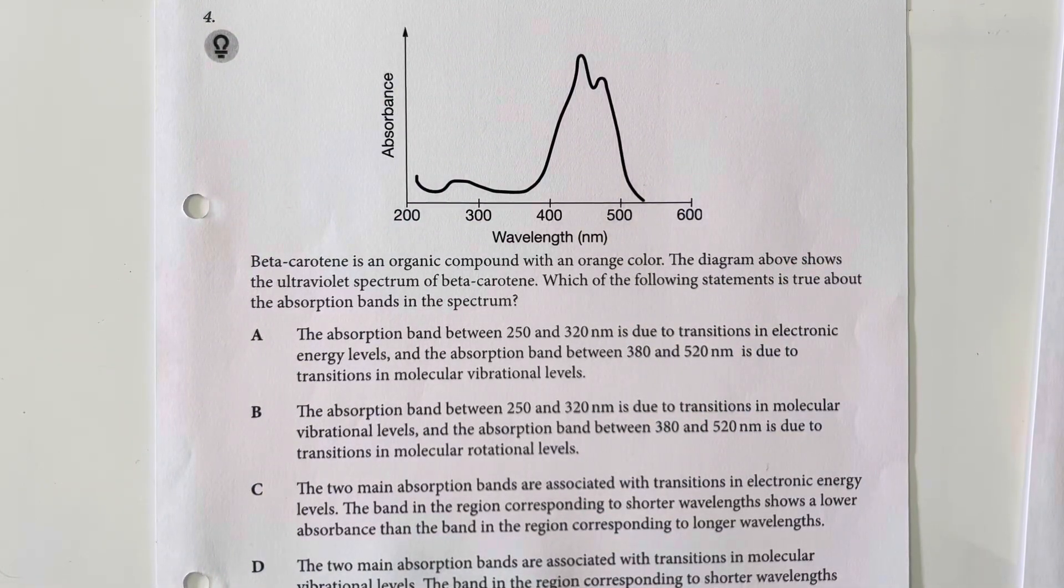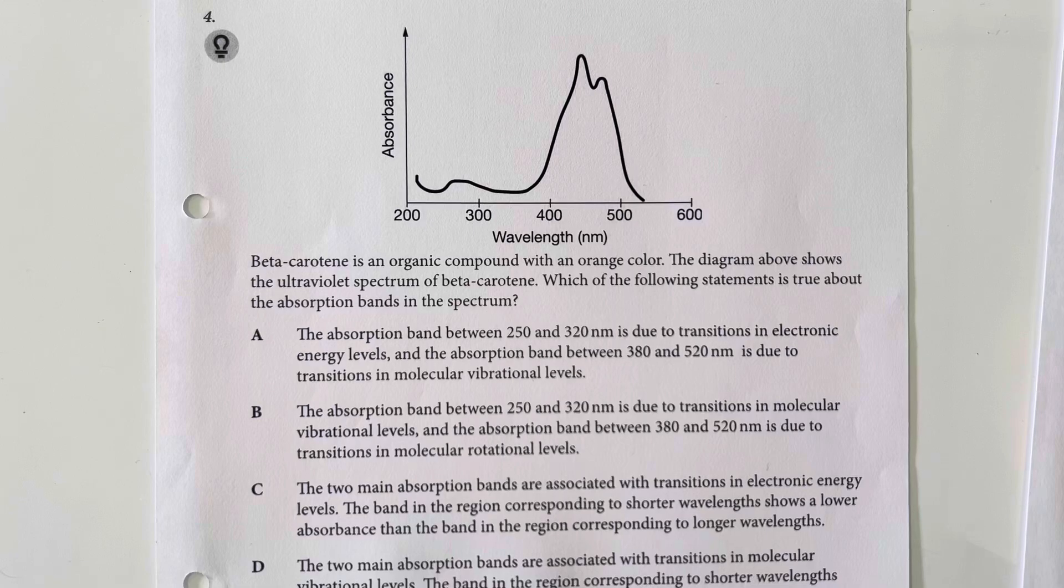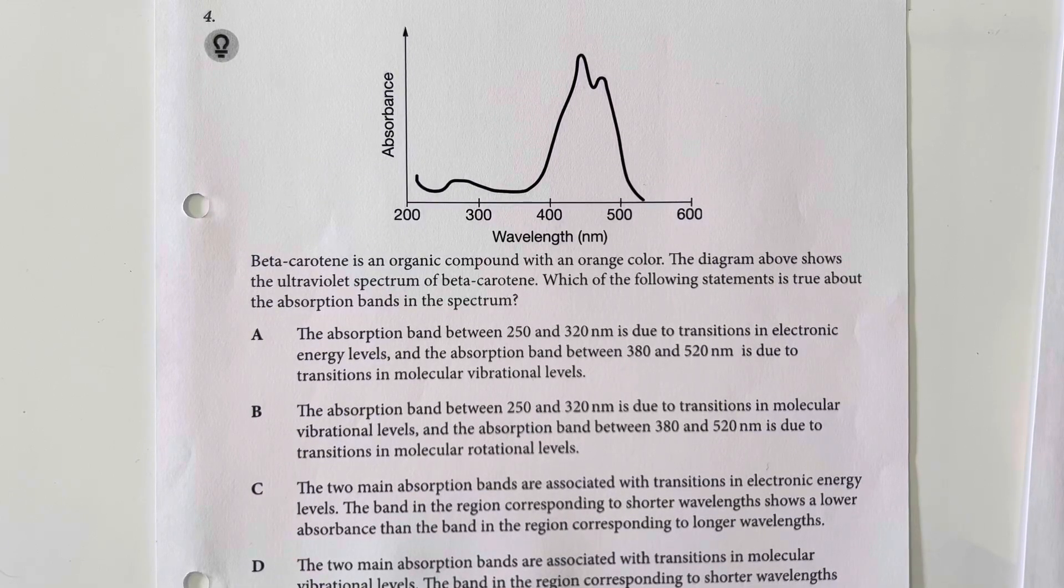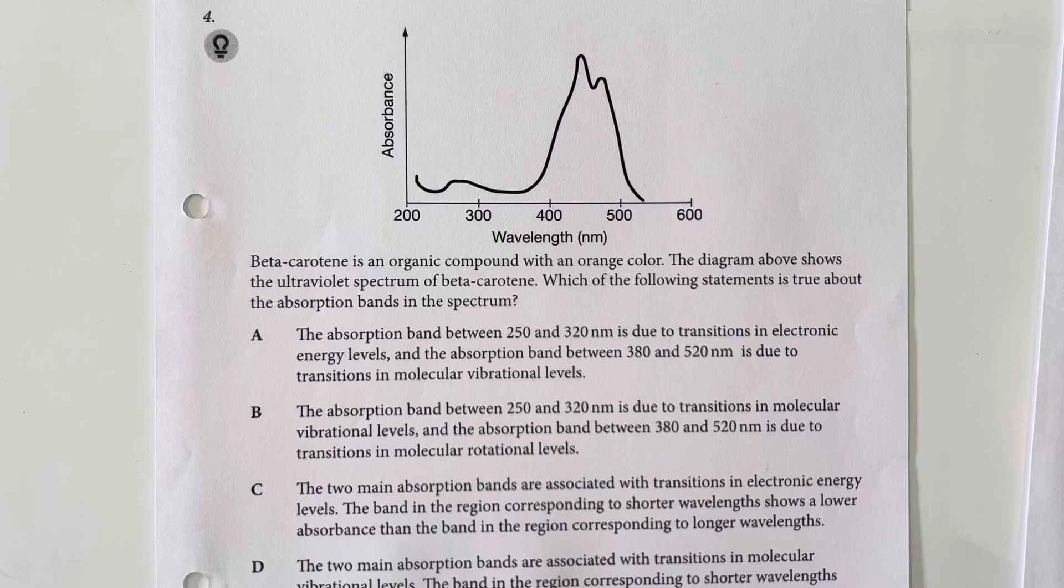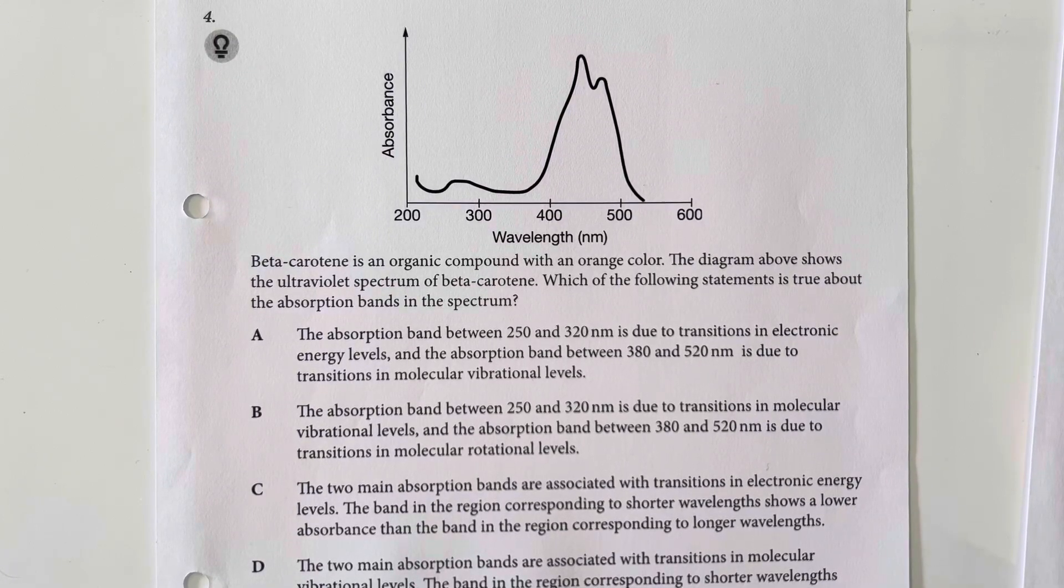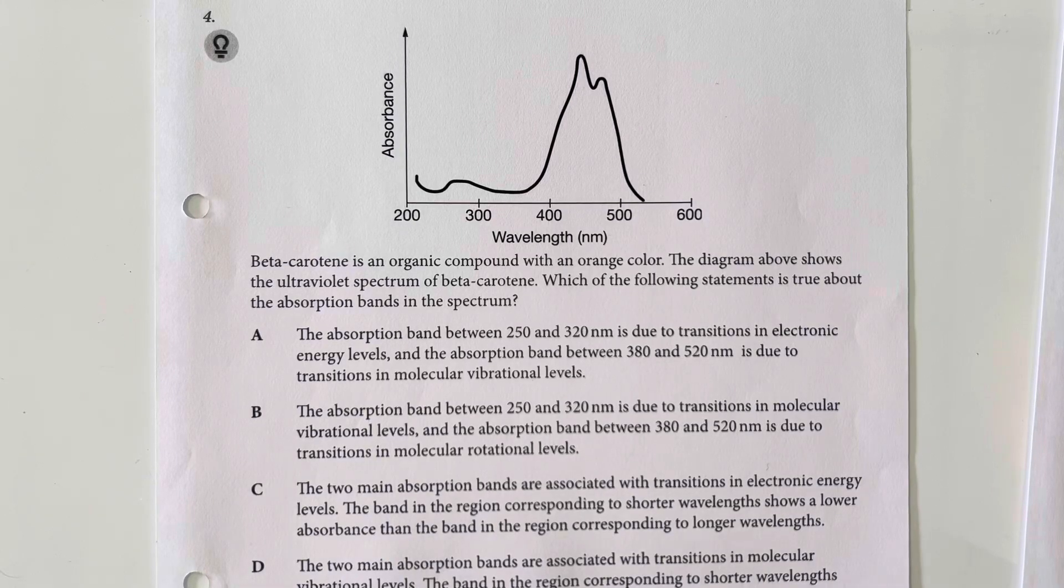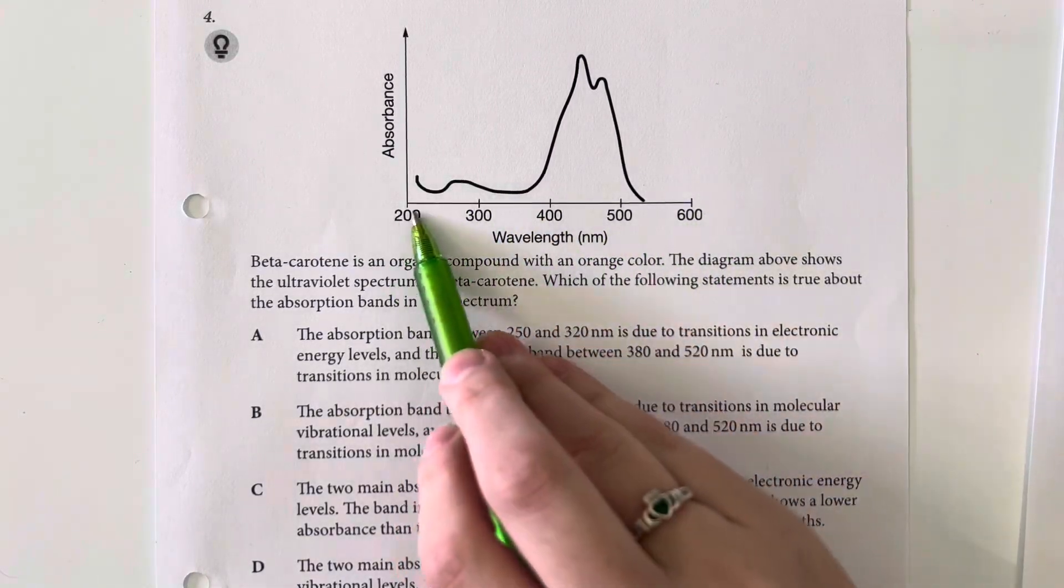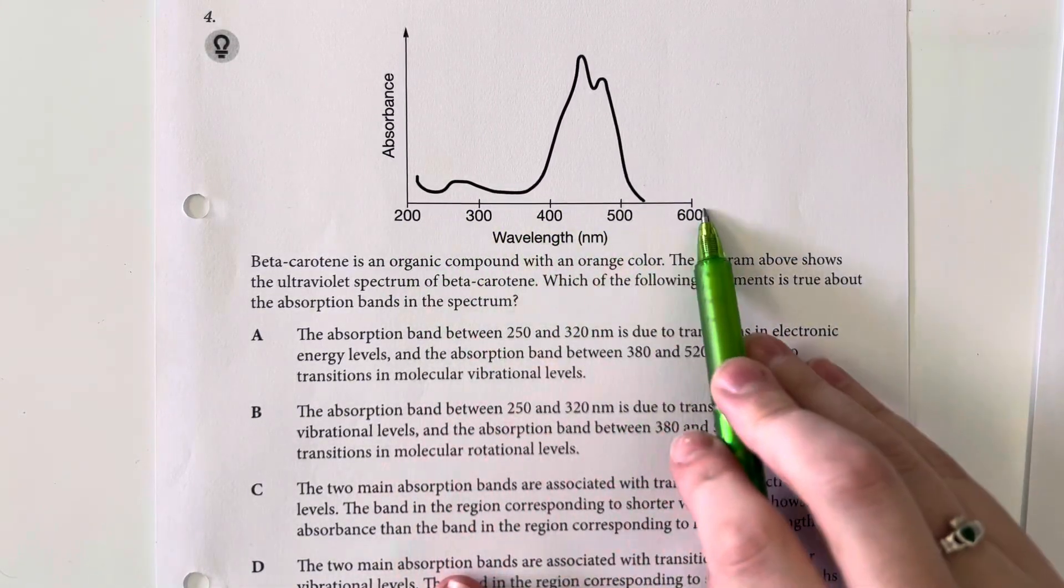Beta-carotene is an organic compound with an orange color. The diagram above shows the ultraviolet spectrum of beta-carotene. Which of the following statements is true about the absorption bands in this spectrum? So, as we go from left to right, we are within the visible range here.